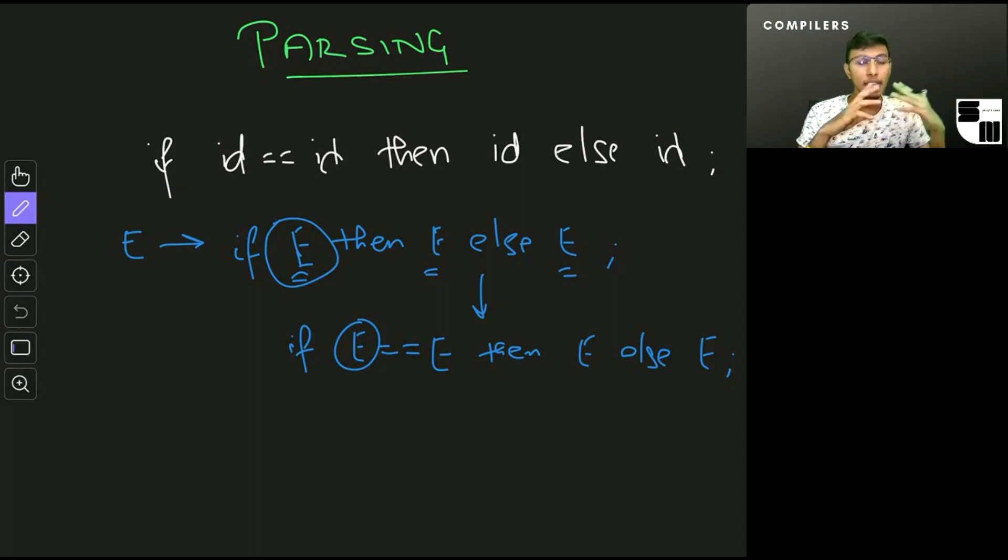At every step we replace the leftmost non-terminal. Very similar to this we have the rightmost derivation, which is that at every stage we would replace the rightmost non-terminal using one of the production rules. This is about leftmost and rightmost derivations.